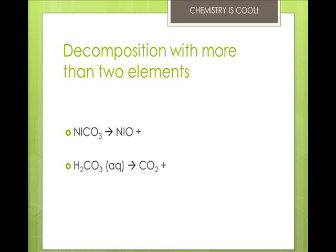When you have more than two elements, for example, you've got nitrogen, iodine, carbon, and oxygen in the first one, you'll have to be given one of the products, because otherwise you don't know where to go. So this one, I give you NiO, so you know that what's left is carbon dioxide. Similarly, the carbonic acid that we have here would decompose into carbon dioxide and water, because that's what's left.